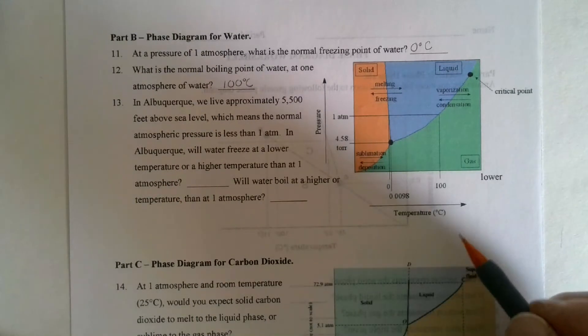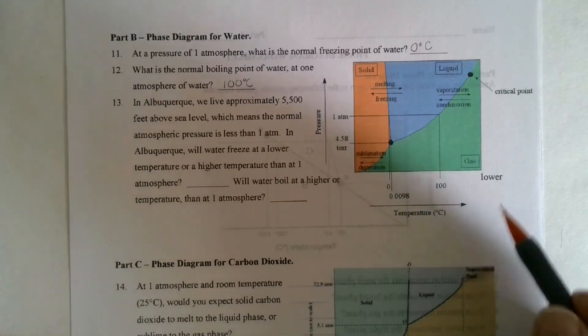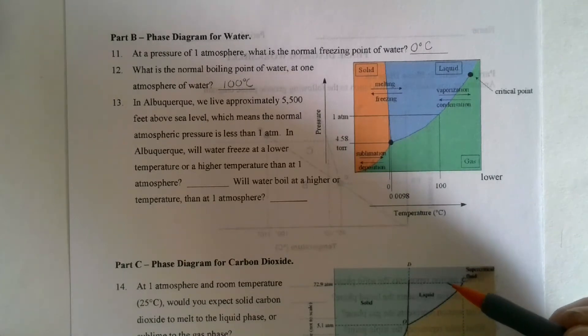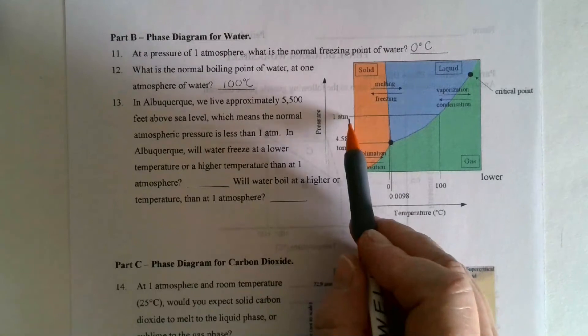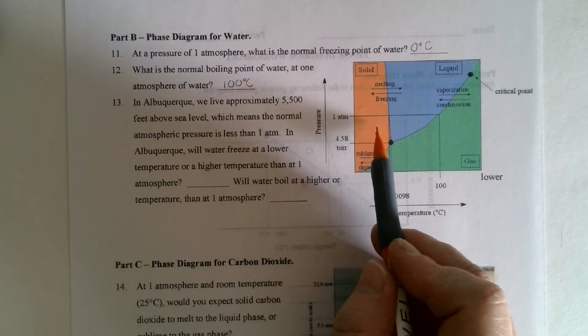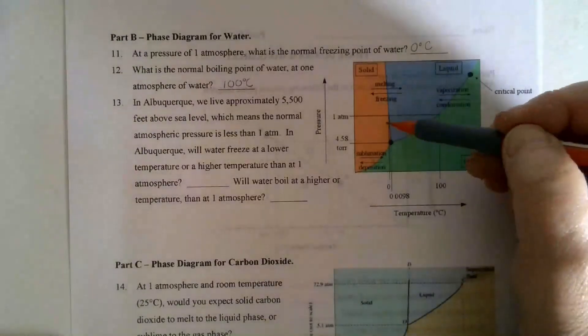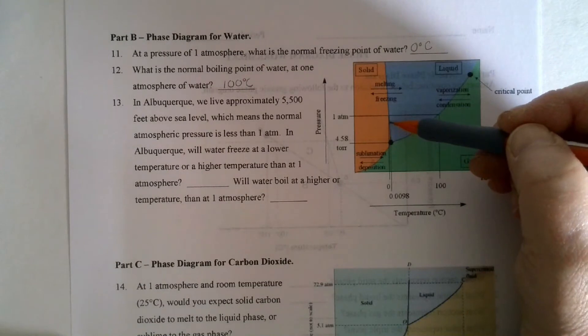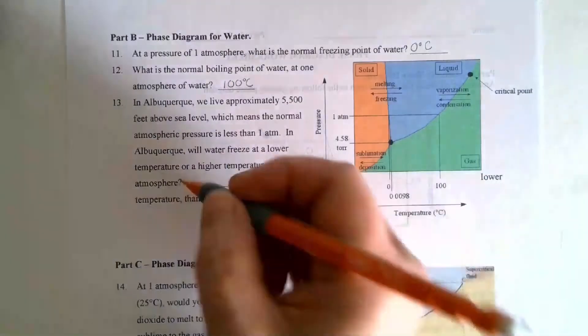In Albuquerque, we live approximately 5,500 feet above sea level, which means the normal atmospheric pressure is less than one. So it's down in here. In Albuquerque, will water freeze at a lower temperature or a higher temperature than at one atmosphere? So is it going to freeze at a lower temperature or a higher temperature? Looks like it's going to be at a higher temperature. So you would write higher.